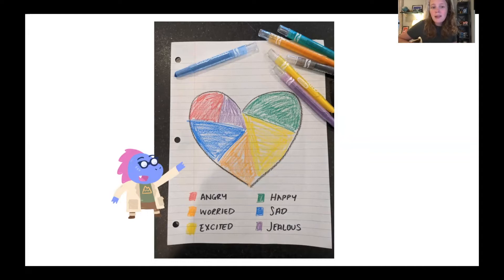And a heart map is something that we kind of use a key and we use colors to represent or to demonstrate what we're feeling. So Dr. Dragon, you can see she used red for angry. She used orange for worried. She used yellow for excited, green for happy, blue for sad, and purple for jealous.